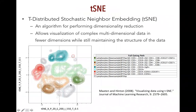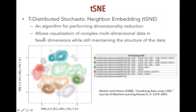T-SNE is an algorithm for dimensionality reduction. It creates two new parameters that separate out data into a dimensionally reduced data space. Many people use this as a first step so you can look at all phenotypes in the same dot plot instead of doing hierarchical gating where you can only use two parameters at a time. T-SNE takes into account all the parameters you dimensionally reduce using the algorithm.